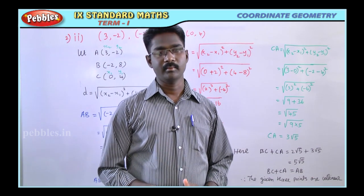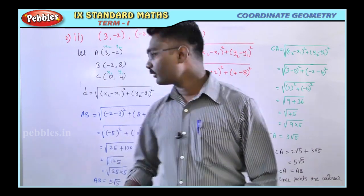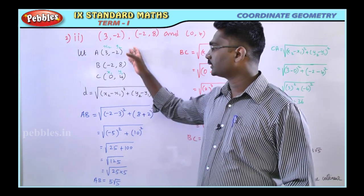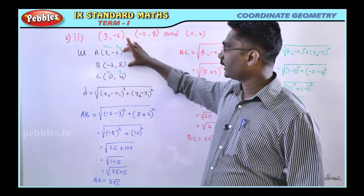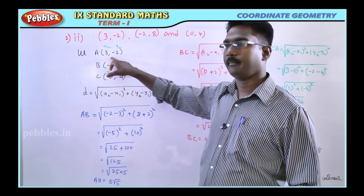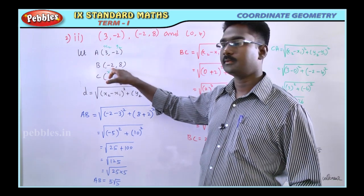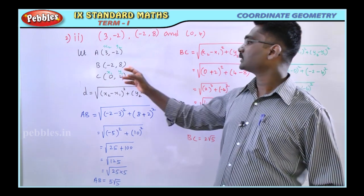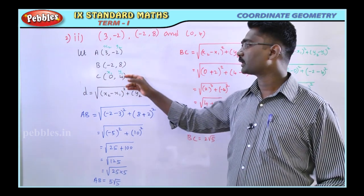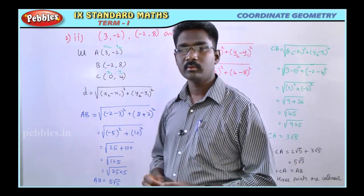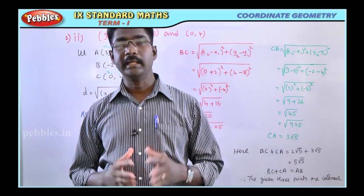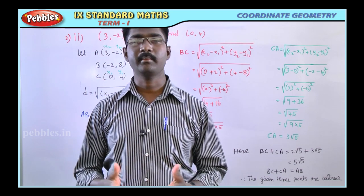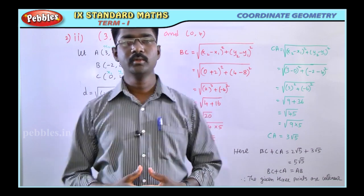This is the procedure for this problem. We use the distance formula D between two points. For AB: X1, Y1 is point A and X2, Y2 is point B. For BC: X1, Y1 is point B and X2, Y2 is point C. We choose any two points as first and second point.